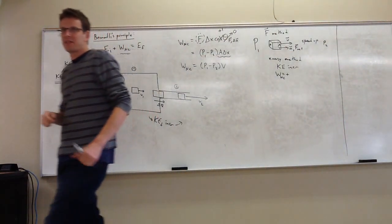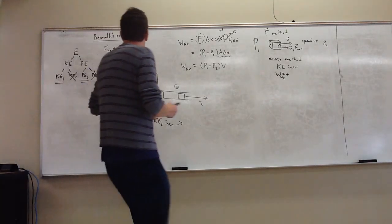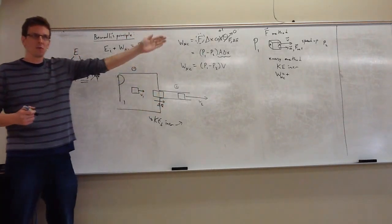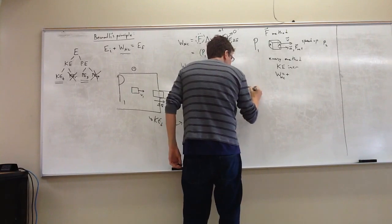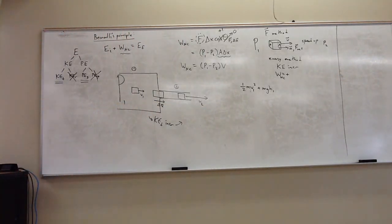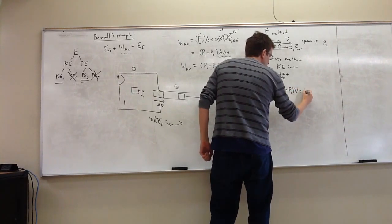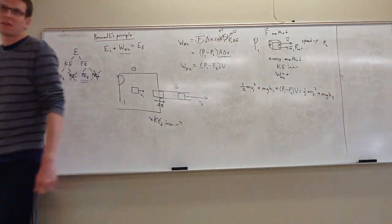With that in mind, let's do the rest of the energy equation. The new part is the non-conservative work we just derived; everything else is the same. I'll put in the kinetic energy terms, and also the gravitational potential energy terms just in case the pipe is vertical or angled. Here is the mechanical energy in section one — kinetic energy, maybe some potential energy — plus the non-conservative work from the surrounding water, plus the kinetic and potential energy in section two.